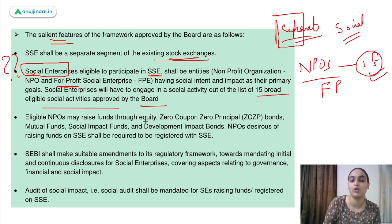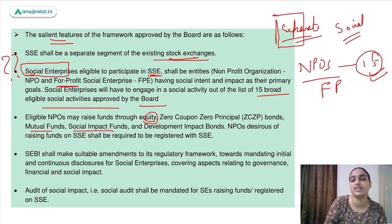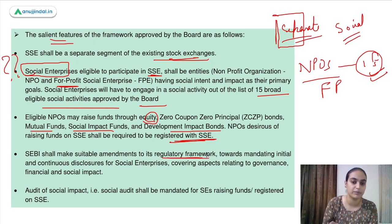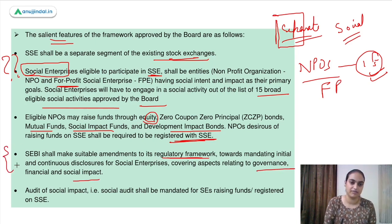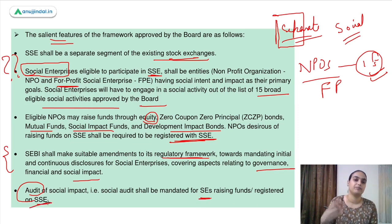Eligible NPOs can raise funds through various instruments including zero-coupon bonds, mutual funds, social impact funds, and development impact bonds. NPOs desirous of raising funds shall be required to register with the social stock exchange. SEBI needs to make amendments to its regulatory framework to cater to these social enterprises — norms related to governance and social impact need to be incorporated. A social audit shall also be mandated for social enterprises raising funds through the social stock exchange.